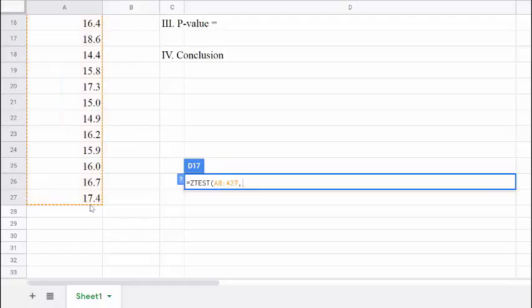After we highlight the data, we use the mean from the null hypothesis, which is 15, and the standard deviation of the population, which is 2.6%.